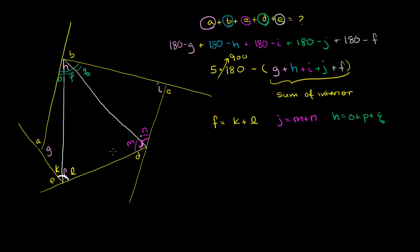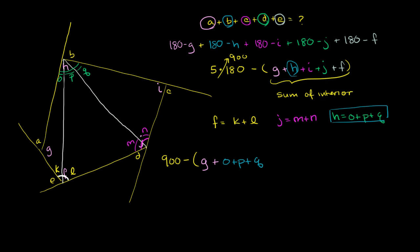We can use the fact that for any triangle, the angles add up to 180 degrees. So we have 900 minus: G plus (O plus P plus Q) plus I plus (M plus N) plus (K plus L). Now something very interesting happens. G plus O plus K are the angles of the first triangle, so they equal 180. P plus L plus M are the angles of the middle triangle, so they equal 180. Q plus N plus I are the angles of the last triangle, so they also equal 180.